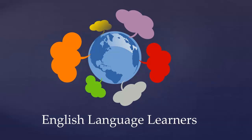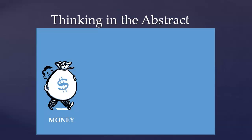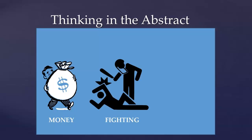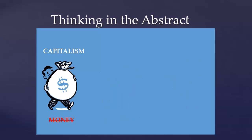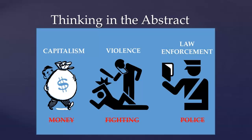In developing your academic vocabulary, you may need to think of things in a more abstract way. Conversational vocabulary might include concrete words like money, fighting, and police. In an academic setting, these might become capitalism, violence, and law enforcement. It might seem like a small difference, but it can be significant in an academic paper.